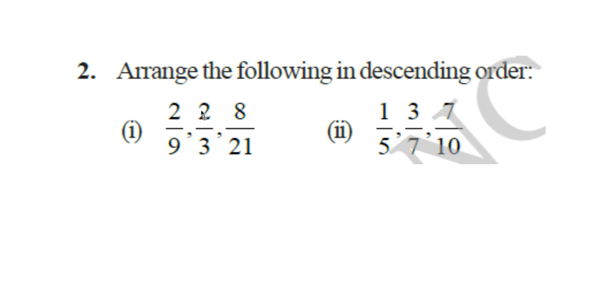This is the second question. Arrange the following in descending order. Descending order means first the biggest number you have to write, then smaller than that. And that way you have to arrange it. Look at the first question: 2 by 9, 2 by 3, 8 by 21. You know 9, 3, 21 are the denominators. The first step is you make these denominators equal. For that, find out the LCM of 9, 3 and 21. The LCM of 9, 3 and 21 is 63.